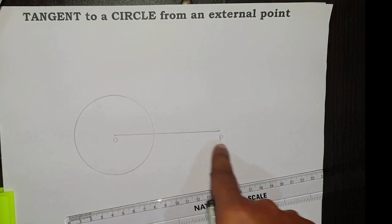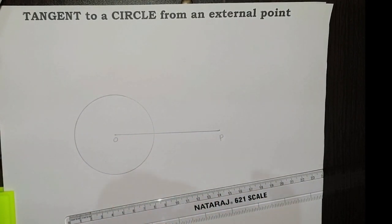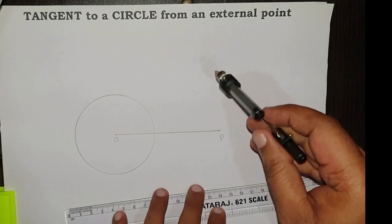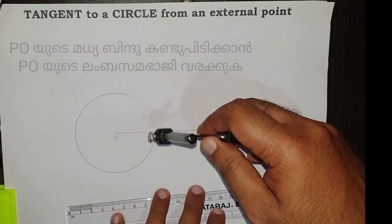Then, find the midpoint of this line segment P O. For that, we draw a perpendicular bisector.